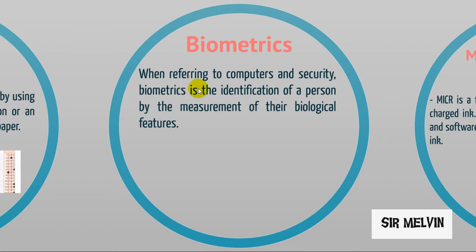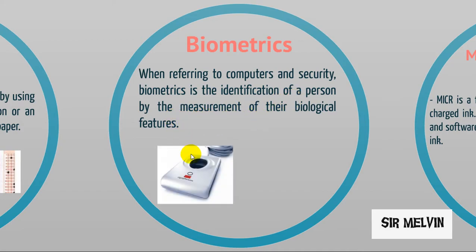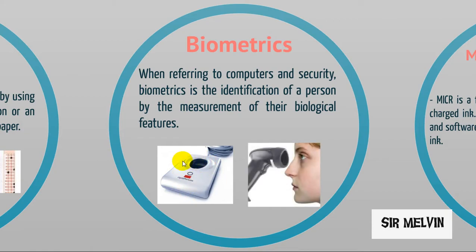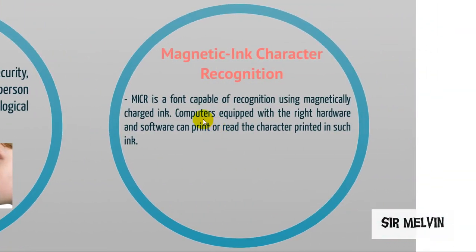Biometrics — when referring to computers and security, biometrics is the identification of a person by the measurement of their biological features, such as fingerprint or eye scanning. Next is magnetic ink character recognition, or MICR. MICR is a font capable of recognition using magnetically charged ink. Computers equipped with the right hardware and software can print or read characters printed in such ink.